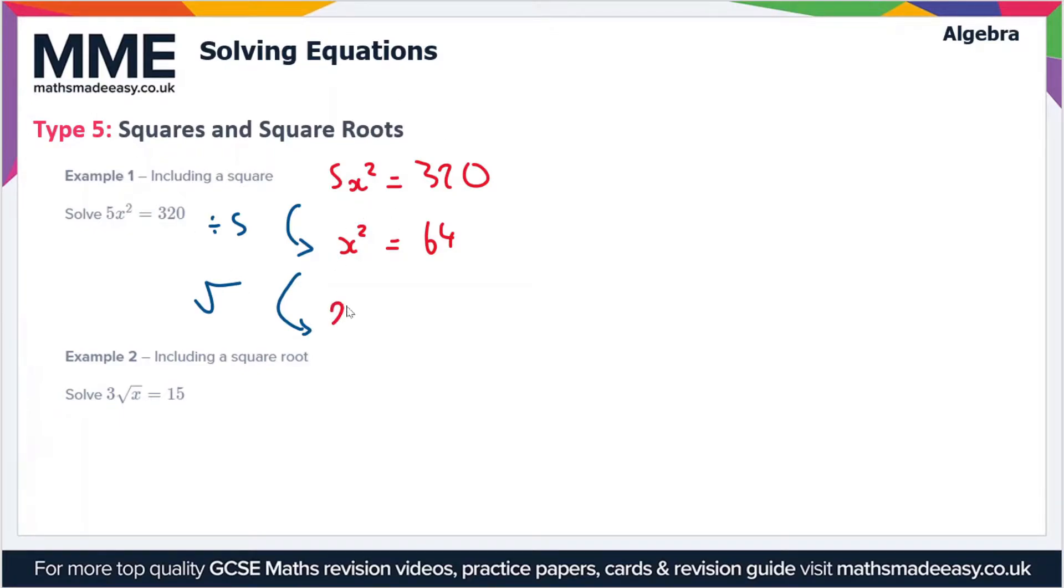When we square root x², we get x. And when we square root 64, we get two terms: minus 8 and plus 8, or just ±8 for short. Why is that? Well, if you square minus 8...